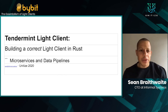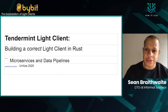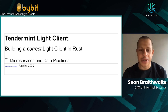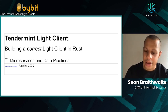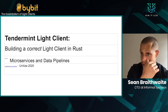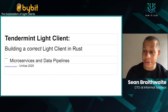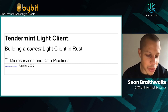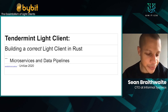All right, hello. My name is Sean Braithwaite, and I work at Informal Systems on the engineering side. We do formal verification of distributed systems. Most of the stuff we do is in the Cosmos ecosystem right now, but we're looking to do collaborations through the greater cryptocurrency scene.